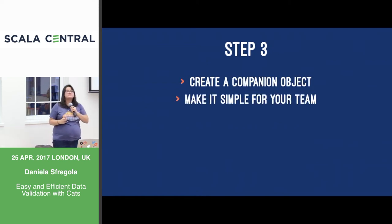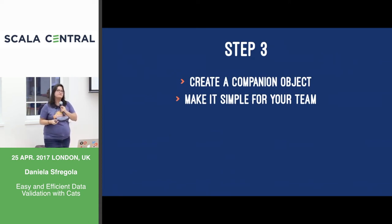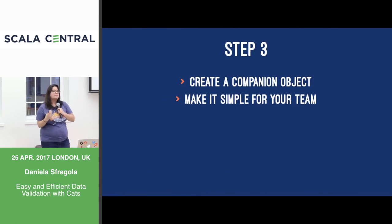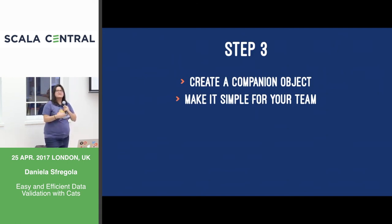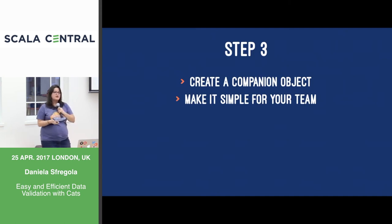The third step is to make it simple for your team. If you try to enforce some rules and they're difficult to follow, guess what? Your team is not going to follow them. I work with people that come from Python and Ruby backgrounds — they're not really into functional stuff too much and they don't like symbols. Decide how you want to instantiate your types and just create a companion object for it so that everyone is happy to use it.